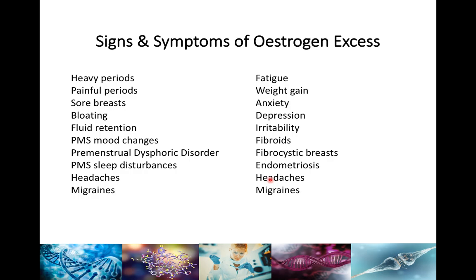Signs and symptoms of estrogen excess include heavy periods, painful periods, sore breasts, bloating, fluid retention, PMS mood changes, premenstrual dysphoric disorder, sleep disturbances premenstrually, headaches and migraines — mainly due to histamine influence — fatigue, weight gain, anxiety, depression, irritability, fibroids, fibrocystic breasts, and endometriosis. If you're getting headaches and migraines premenstrually or at ovulation, it's because you're not detoxifying estrogen through the liver, it's building up histamine, which is causing those problems.